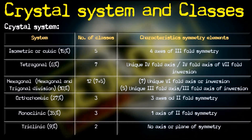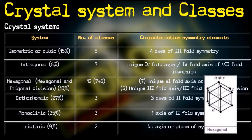Then there is the hexagonal system, which is again divided into hexagonal and trigonal divisions and has a total of 12 classes. In the hexagonal system there are four axes: three horizontal axes at 60 degrees to each other, and a fourth vertical axis which may be shorter in length than the horizontal ones. The angle between the horizontal and vertical axes is 90 degrees.